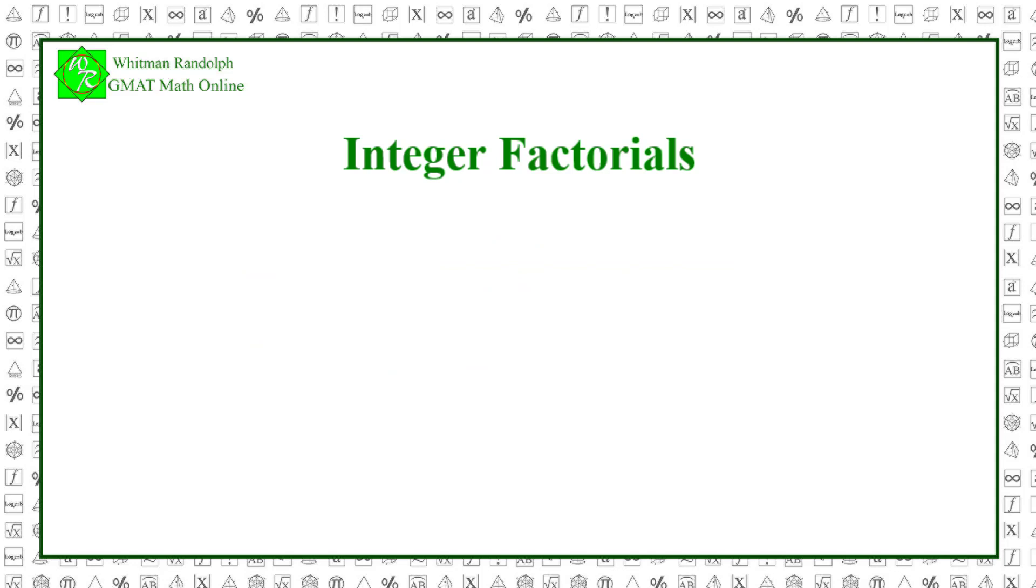Now let's look at this problem: 50 factorial ends with how many zeros? And here are some possible answers.